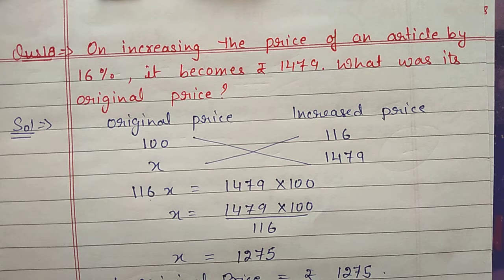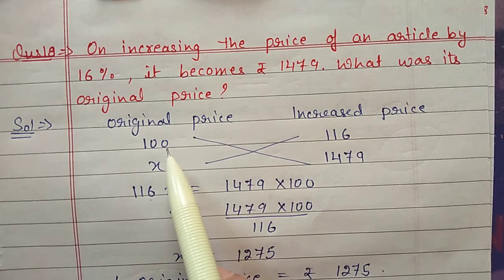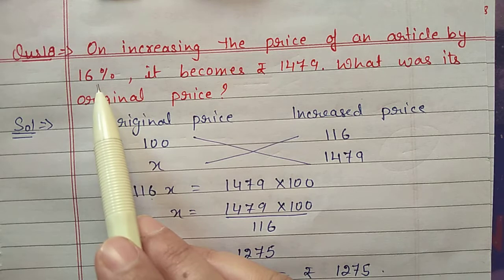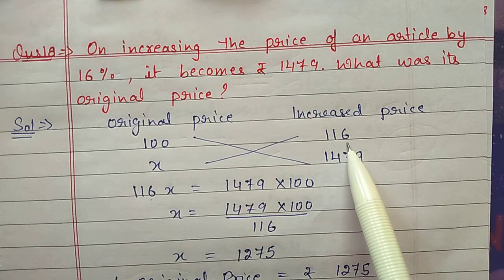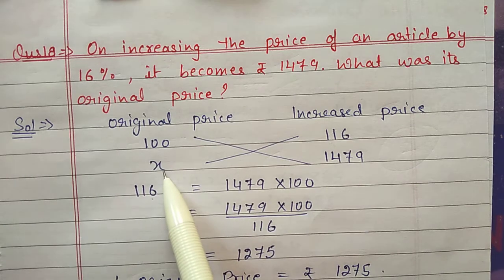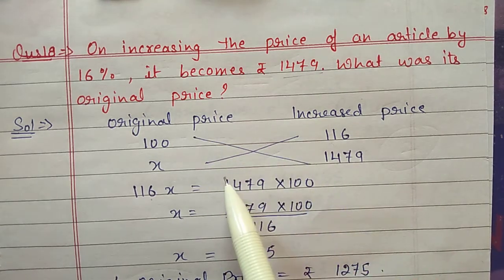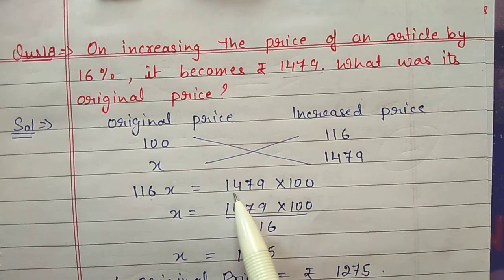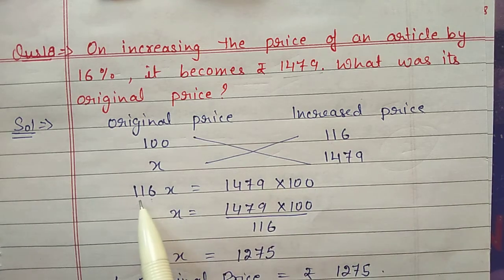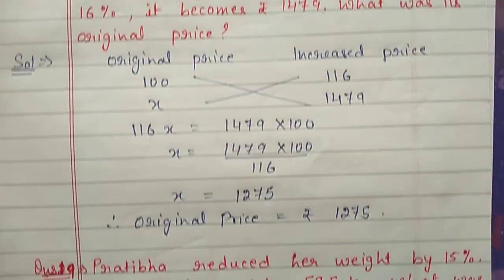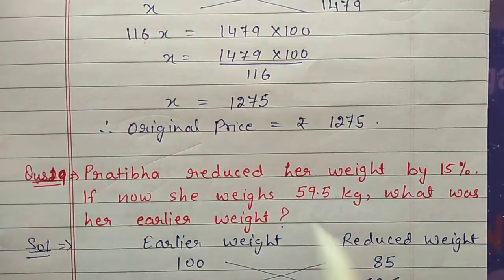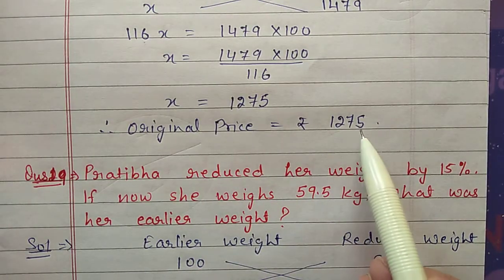Question number 18: on increasing the price of an article by 16 percent it becomes 1479 — what was its original price? Let original price be 100, then after increasing 16 percent it becomes 116. Let original price be x, after increasing it becomes 1479. Cross multiply: 116x equals 1479 into 100. Shift 116 to the other side, cancel — original price was 1275 rupees.